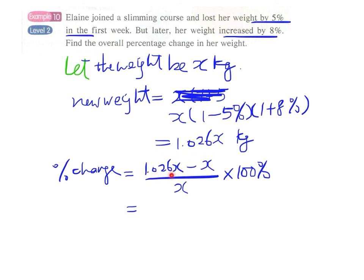These two terms can be simplified, which gives us 0.026x over x times 100%. And finally, if we cancel out the x, we have